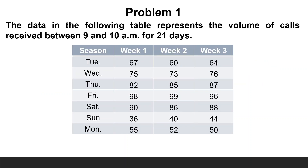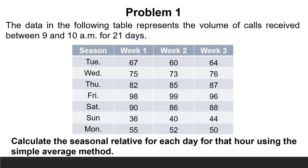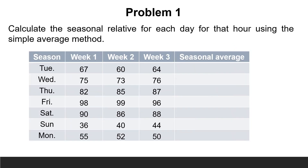The data in the following table represents the volume of calls received between 9 and 10 a.m. for 21 days. Calculate the seasonal relative for each day for that hour using the simple average method. In this problem the seasons are the days. To solve such a problem, we have to do three steps. The first step is to calculate the seasonal average — in this case, the average of each day.